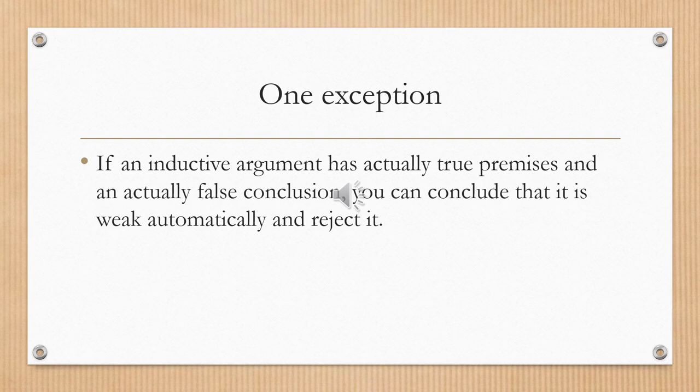The one exception where the truth values of the statements in an argument are relevant to determining strength or weakness has to do with the case of a weak argument where you have actually true premises and an actually false conclusion. If you think about it, you can evaluate this argument as being weak automatically — because if the premises are actually true and the conclusion is actually false, then assuming the premises are true, the conclusion is still probably false. So when you have this one configuration — truly true premises and a really false conclusion — you can automatically conclude that an argument is weak and reject it. All other configurations of truth values really don't matter; this is the only one we need to pay attention to.